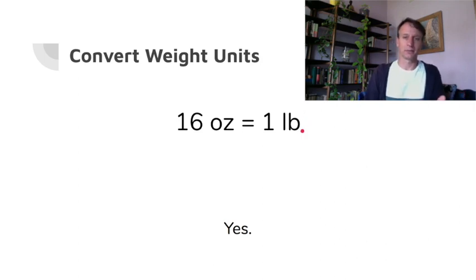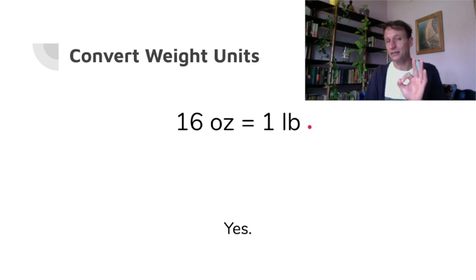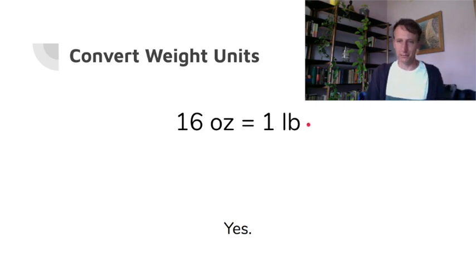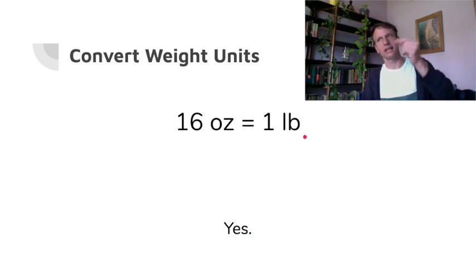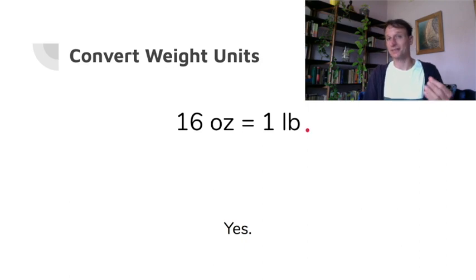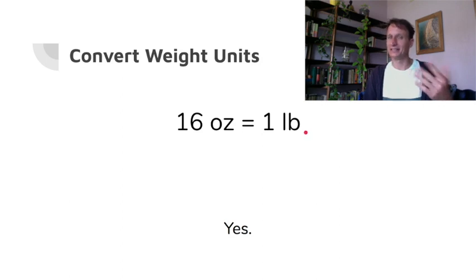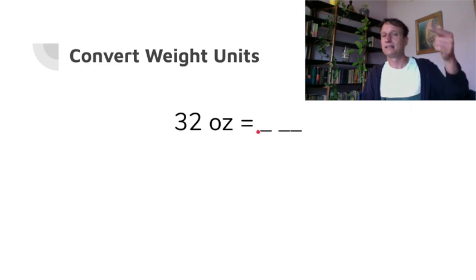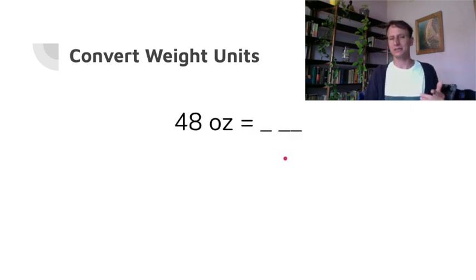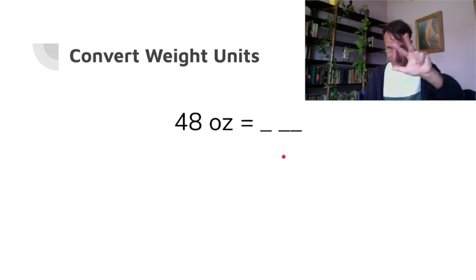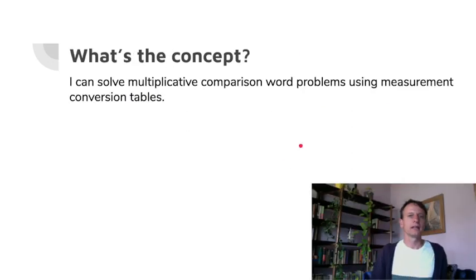Pounds plural can be abbreviated as either 'lb' or 'lbs' because 'libra' is already plural — just like the word 'data': one piece of datum, many data. Thirty-two ounces is two pounds, and 48 ounces — 16 plus 16 plus 16 — is three pounds.